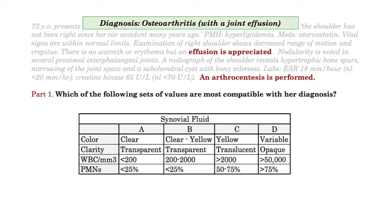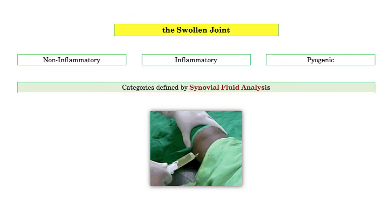With this background, we can work through the other typical osteoarthritis derivatives you'll need to know for the boards. Moving on to our algorithmic approach to the swollen joint, synovial fluid analysis will be a key branch point for joint disorders on the USMLE and really makes our job easy. These are the categories that should come immediately to mind when a vignette describes a joint effusion: non-inflammatory, inflammatory, and pyogenic, which are defined by the synovial fluid analysis. This is a must-know.